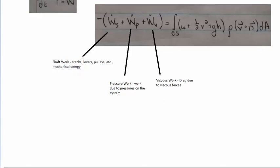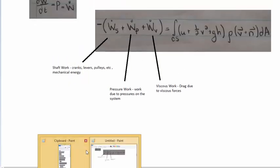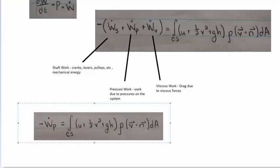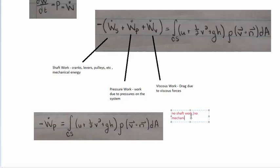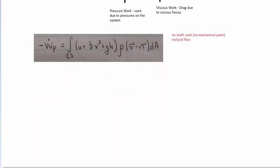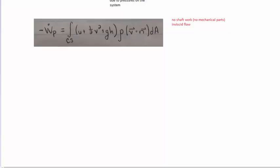We introduced those terms, and now we're going to assume they don't exist in our system — except for pressure work. The assumptions we make here are: no shaft work, meaning no moving cranks or levers, and inviscid flow, meaning the flow has no effects due to viscosity. This kills the shaft work term and the viscous work term, leaving only the pressure work term.